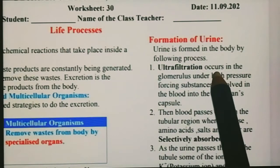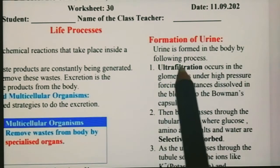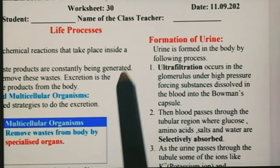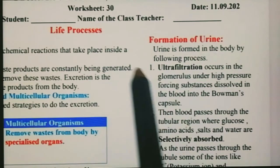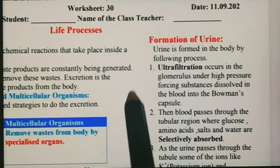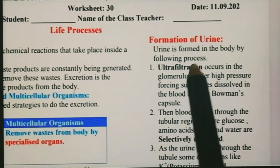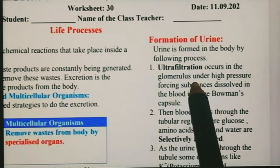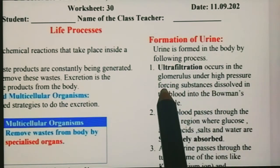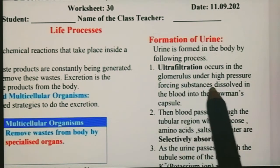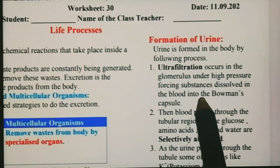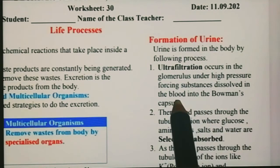Ultrafiltration occurs in the glomerulus. जैसे Bowman's capsule ऐसे बनी हुई थी, उसमें glomerulus का गुच्छा पड़ा हुआ था। Bowman's capsule के अंदर glomerulus का filtration हो रहा था। Ultrafiltration occurs in the glomerulus under high pressure, forcing substances dissolved in the blood into the Bowman's capsule.